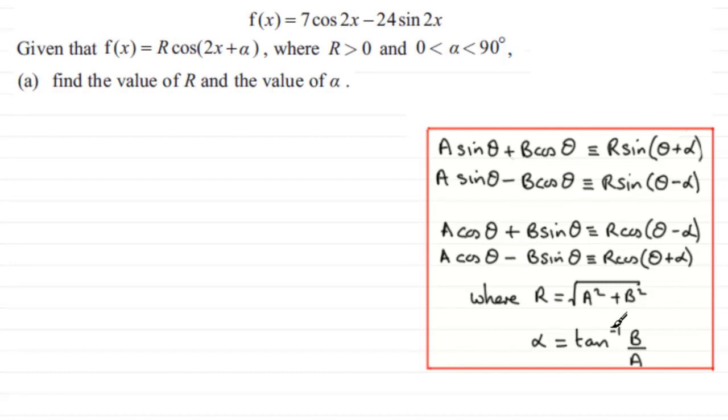I'm assuming that you're familiar with these identities, so we pick up on this last one here. If I was answering this question, I'd put down what we're given: f(x) is equal to 7cos2x then minus 24sin2x.